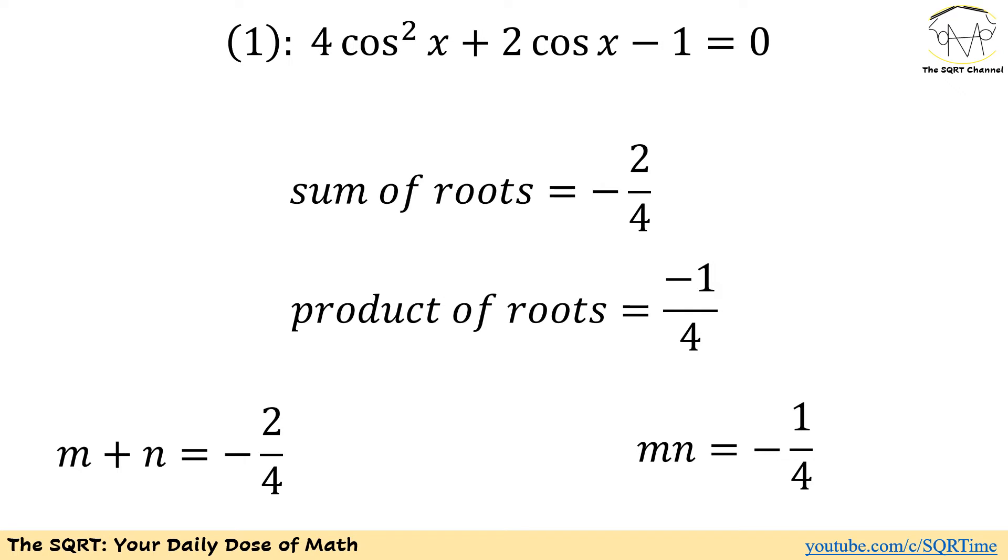Now let's start with reviewing a few basic points. We know sum of roots can be written as minus 2 over 4 in this quadratic equation. Since M and N are roots, M plus N can be written as negative 2 over 4 and M times N can be written as minus 1 over 4.